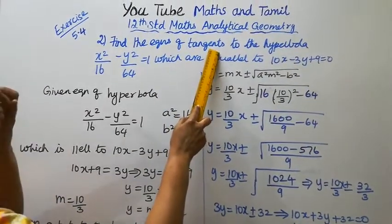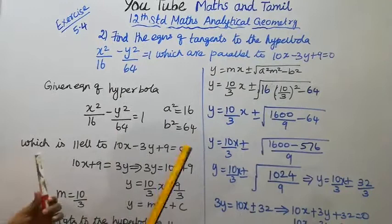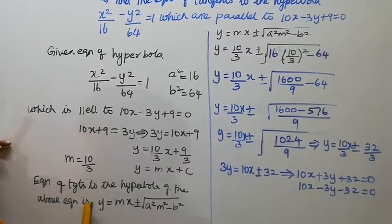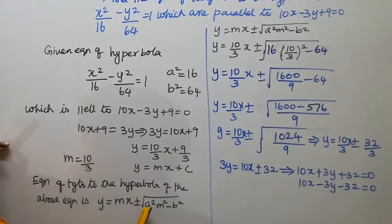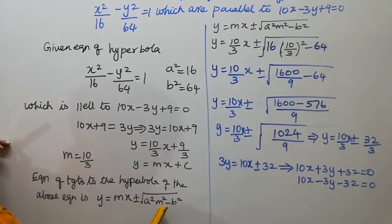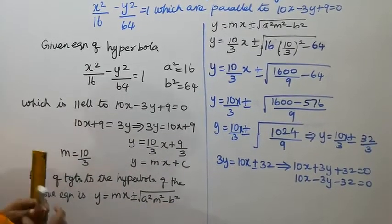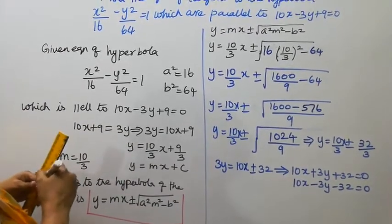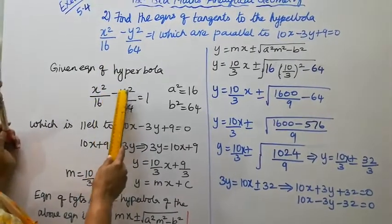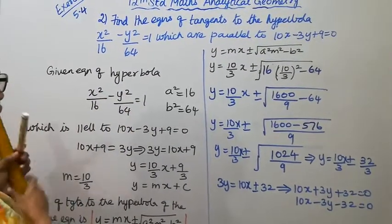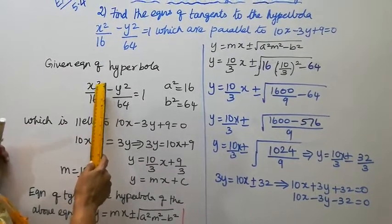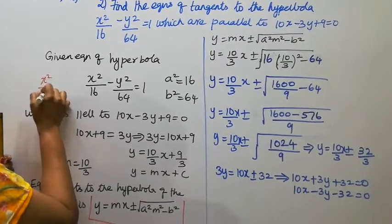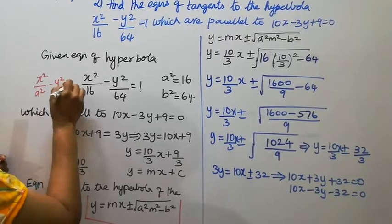For the equation of tangents to the hyperbola, the condition formula required is: y equal to mx plus or minus root of a²m² minus b². The standard form of the hyperbola is x² by a² minus y² by b² equal to 1.